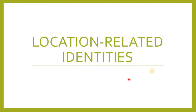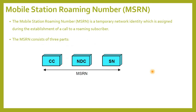Location Related Identities. Mobile Station Roaming Number — MSRN. The MSRN is a temporary network identity which is assigned during the establishment of a call to a roaming subscriber. More information about the use of MSRN has been discussed in detail in lectures related to call flows. The MSRN consists of three parts: CC — Country Code, NDC — National Destination Code, and SN — the address to the servicing MSC/VLR.